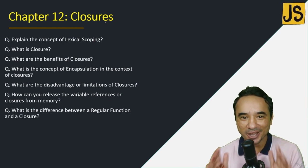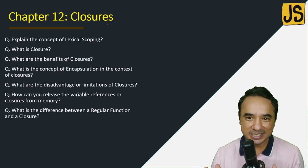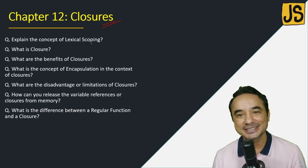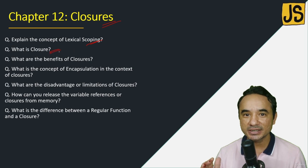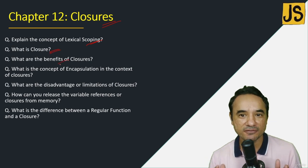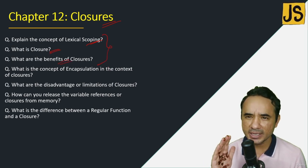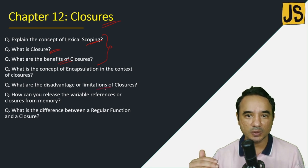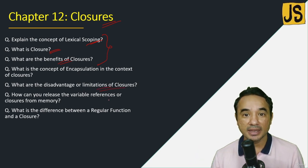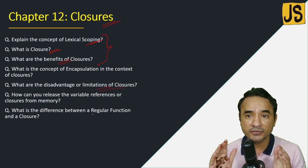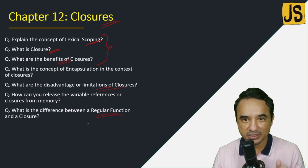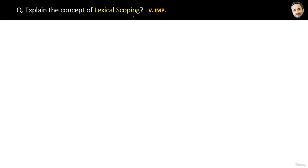Now we will close the chapter on events and start closures in JavaScript. The first three questions — lexical scoping, closure, and the benefits of closure — are very much connected. Then we will check the limitations of closures and how closures differ from regular functions. Let's start with the first question: explain the concept of lexical scoping.